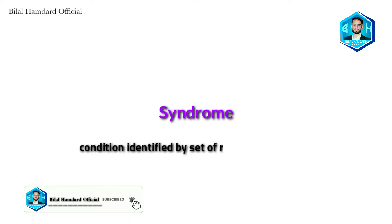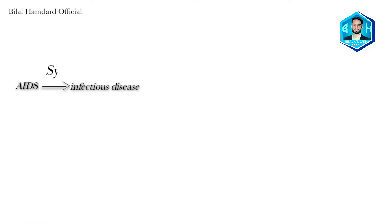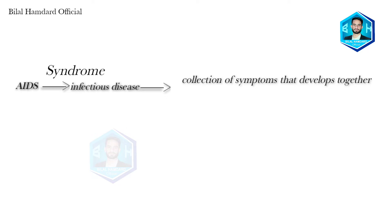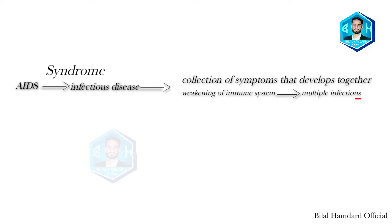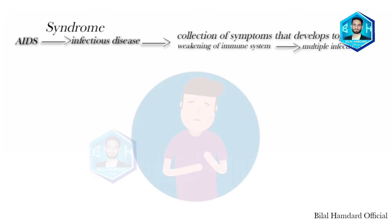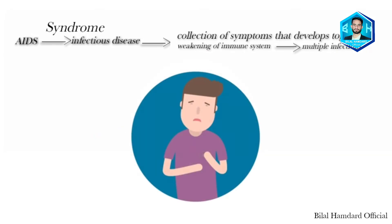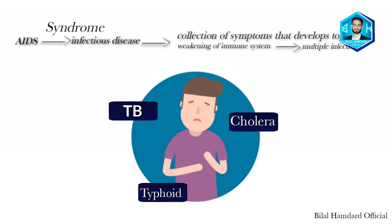Before moving ahead, let's first learn what a syndrome means. It's a condition identified by a set of related symptoms. In simple words, AIDS or any syndrome is a collection of symptoms that develop together. In the case of AIDS, the disease leads to multiple infections due to weakening of the immune system, so the person suffering shows multiple symptoms all at the same time — for example, symptoms of TB, typhoid, and cholera could all be seen in the patient. This is why AIDS is called a syndrome.